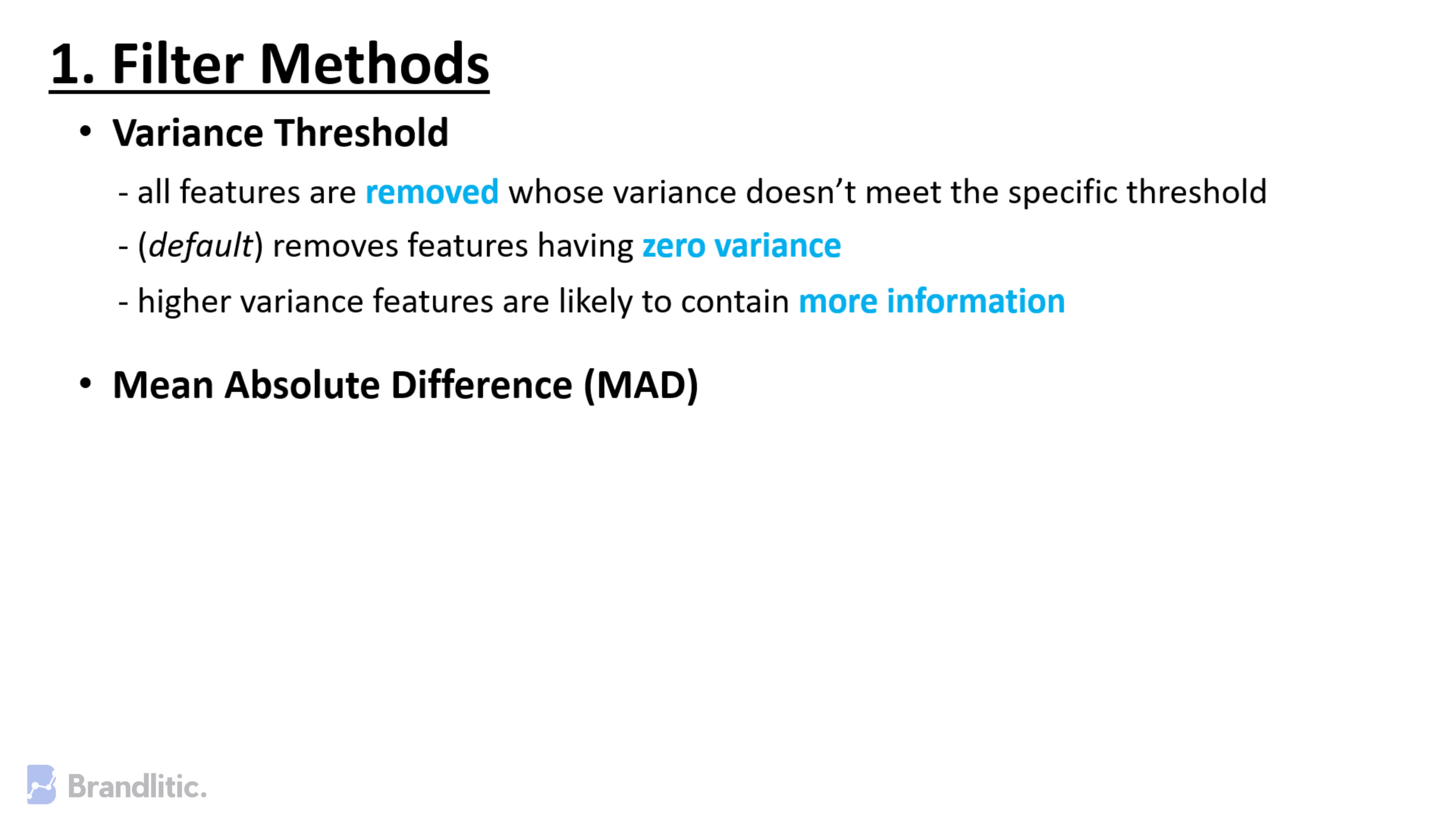Mean Absolute Difference or MAD. This method is similar to the variance threshold method but the difference is there is no square in MAD. This method calculates mean of absolute differences from the mean value.